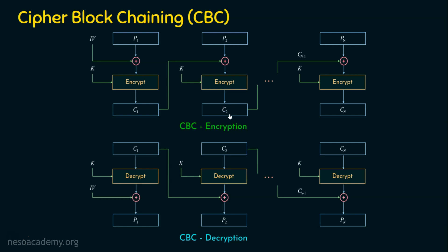For generating C3, C2 acts as an input. So P3 is XORed with C2, then it is given to the encryption algorithm with the key, and C3 is generated. It is clear that for generating the ciphertext of the current block, we need the ciphertext of the previous block. The ciphertext of the previous block is not directly given to the encryption algorithm; rather, it is XORed with the current plaintext block.